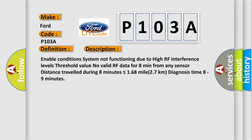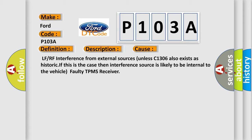This diagnostic error occurs most often in these cases: LF or RF interference from external sources unless C1306 also exists as historic. If this is the case, then interference source is likely to be internal to the vehicle. Faulty TPMS receiver.